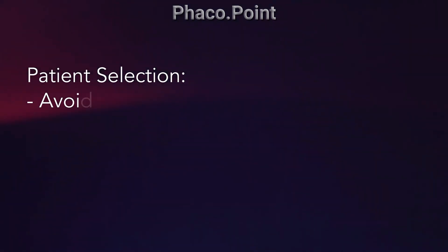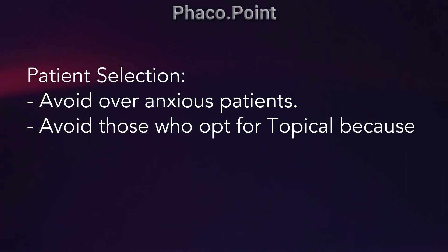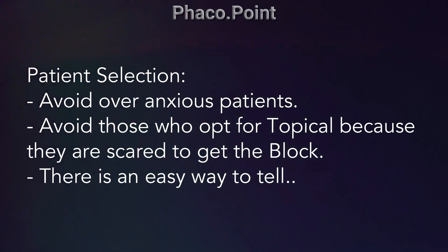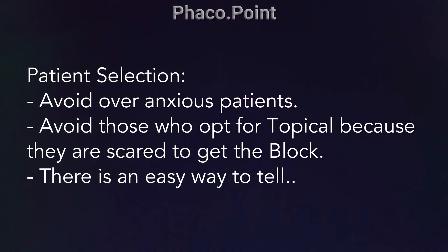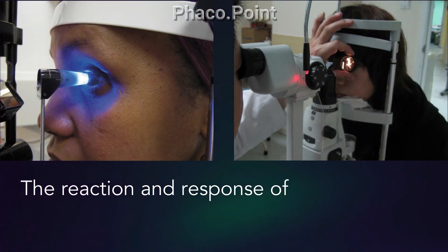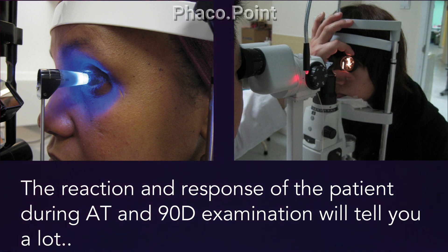Now for patient selection: you should avoid over-anxious patients. Definitely avoid those patients who opt for topical anesthesia because they are scared to get the block. There is an easy way to assess if a patient will tolerate topical anesthesia — I look at the response and reaction of the patient while performing applanation tonometry and a 90D examination. This tells me whether the patient will cooperate during the procedure.